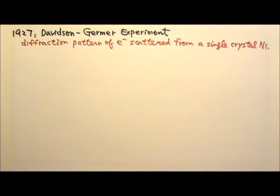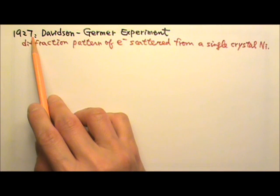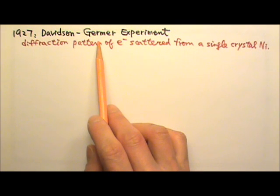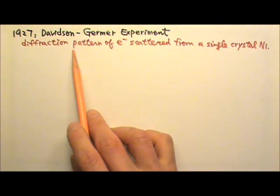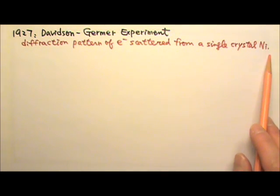In order to confirm de Broglie's hypothesis, we must show that particles can exhibit wave behavior. In 1927, the first confirmation came when American physicists Clinton Davidson and Lester Germer successfully produced the diffraction pattern of electrons scattered from a single crystal of nickel.